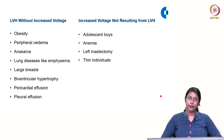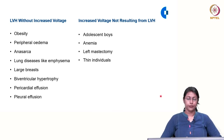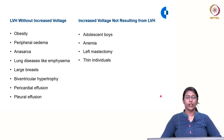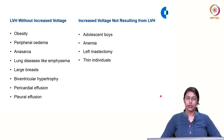Conversely, there are conditions with increased QRS voltage not resulting from LVH, such as adolescent boys, patients with anemia, patients who underwent left mastectomy, or thin individuals. These conditions must be kept in mind when reading any patient's ECG.